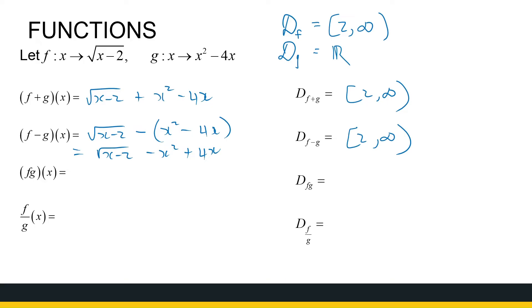The third one, the product function, we simply multiply the two. Root of x minus 2 times x squared minus 4x. Remember those brackets, makes a difference. And again, my domain is the intersection of the two.